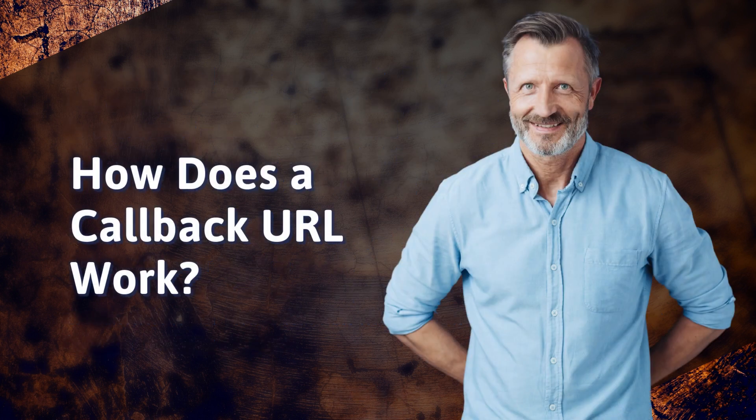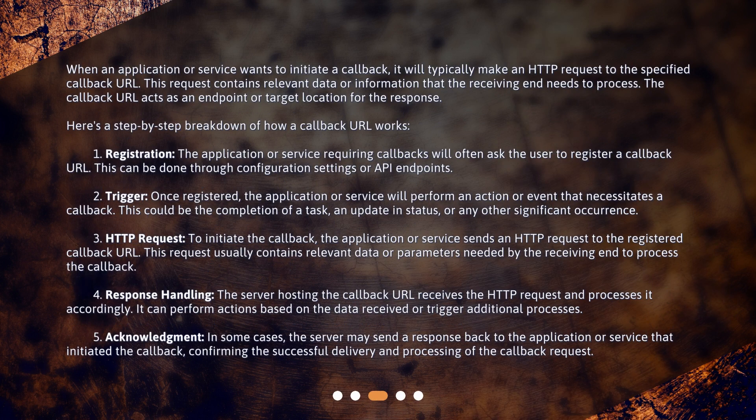How does a callback URL work? When an application or service wants to initiate a callback, it will typically make an HTTP request to the specified callback URL. This request contains relevant data or information that the receiving end needs to process. The callback URL acts as an endpoint or target location for the response. Here's a step-by-step breakdown of how a callback URL works.